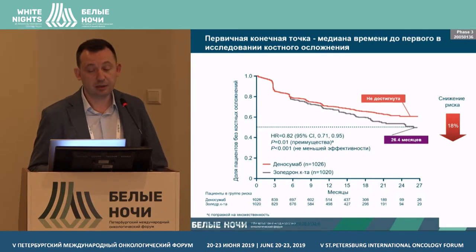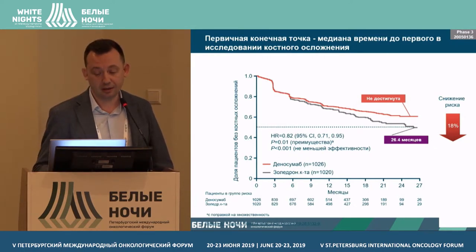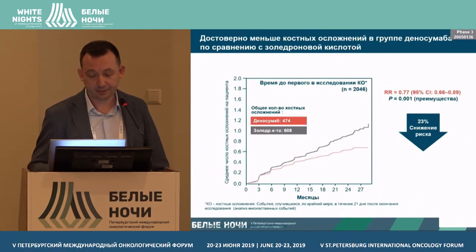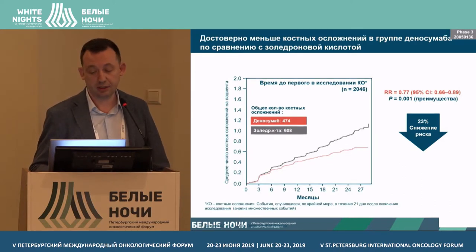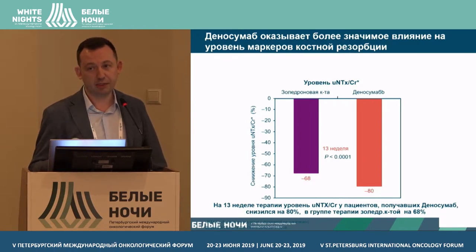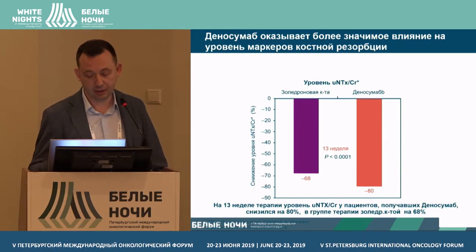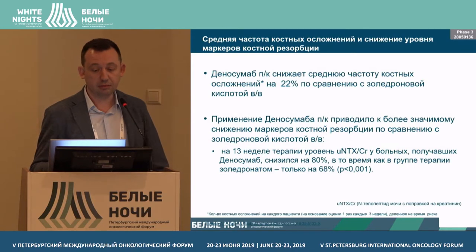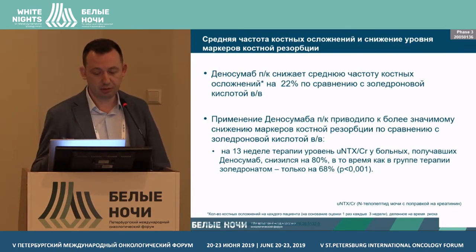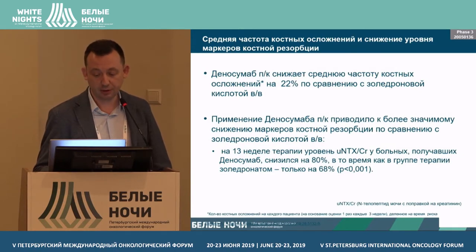For primary endpoints, the median for denosumab was not achieved, but with zoledronic acid it was 26 months, showing an 18% risk reduction. Fewer bone complications were seen in the denosumab group versus zoledronic acid — a 23% risk reduction. Additionally, bone marker levels were evaluated at week 13, assessing urinary telopeptide and creatinine. Markers of bone resorption were reduced by denosumab versus zoledronic acid, with denosumab reducing the rate by 22%. Denosumab subcutaneously resulted in more significant reduction of bone resorption markers.